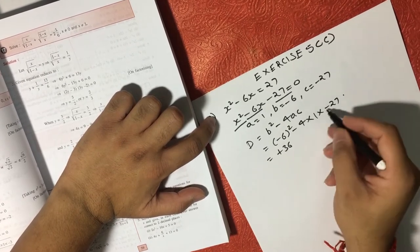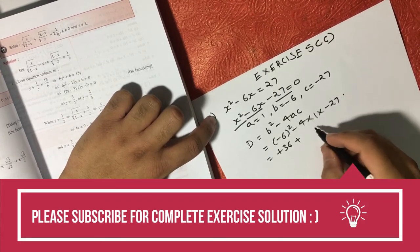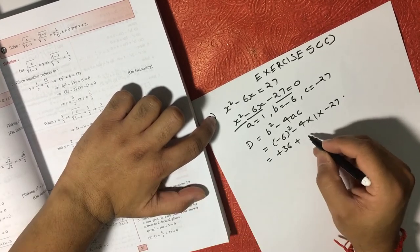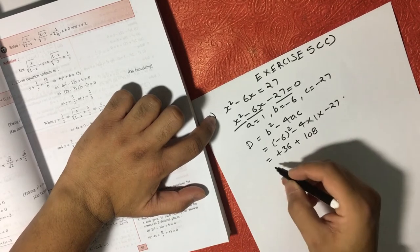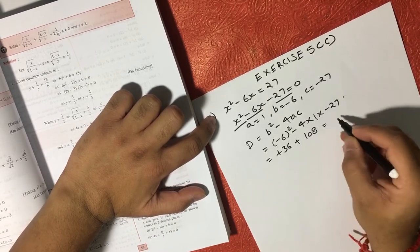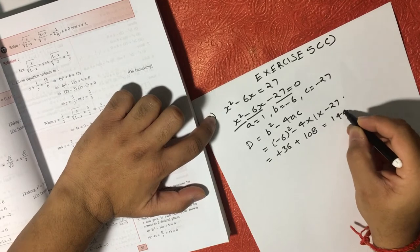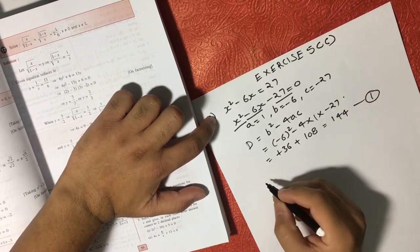Minus times minus is plus, 6 square is 36, 36 minus minus is plus, 4 into 1 is 4, 4 into 27 is 108, 36 plus 108 becomes 144, this is your equation number 1.